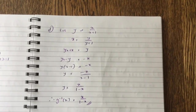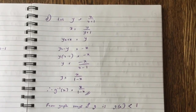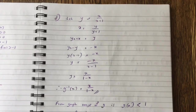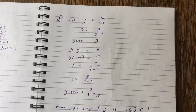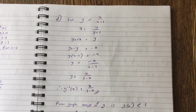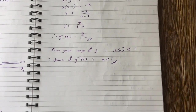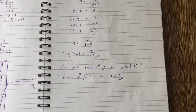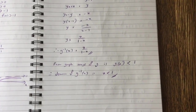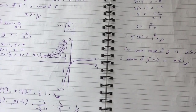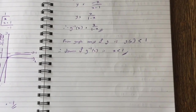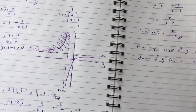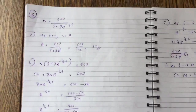Part d: for g⁻¹(x), let y = x/(x + 1). Rearranging gives y(x + 1) = x, so yx + y = x, thus y = x − yx = x(1 − y), giving x = y/(1 − y). So g⁻¹(x) = x/(1 − x). The domain of g⁻¹ equals the range of g. From the graph, the range of g is less than 1, so the domain of g⁻¹ is x < 1.